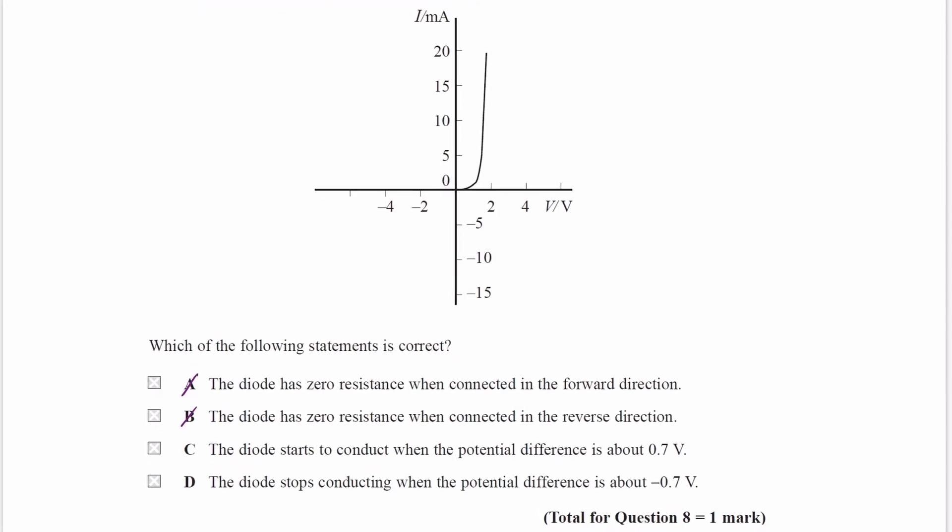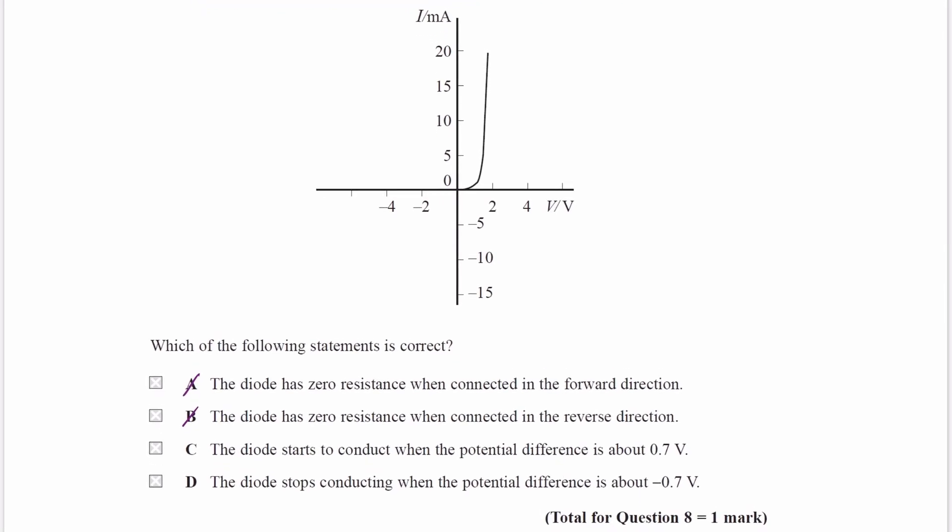For C, the diode starts to conduct when the potential difference is about 0.7 volts. That is correct. So a diode's threshold voltage, or cut-in voltage, is about 0.7 volts. That's when the resistance stops being very high, and then it starts to conduct electricity. So C would be correct.